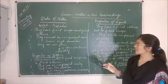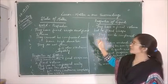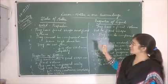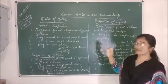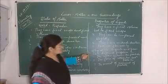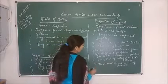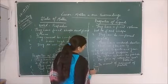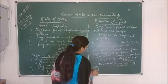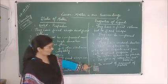Solids fill their containers completely. All these properties of solid — why they have fixed shape, why they cannot be compressed easily, why they have high densities, why they do not flow, and why they fill their containers completely — the reason behind it is the space between the particles. In solid, the particles, molecules, or atoms are very close to each other.